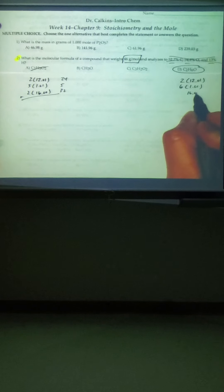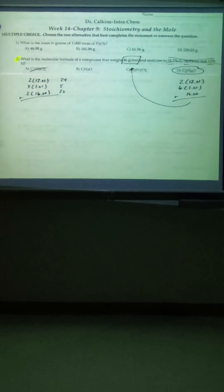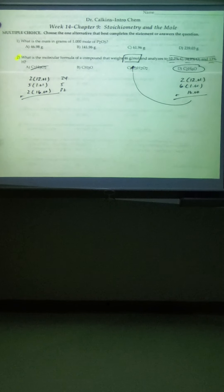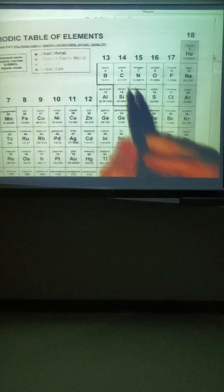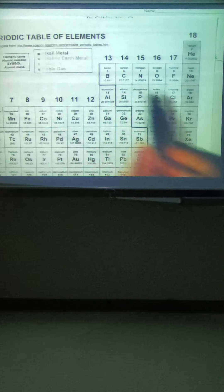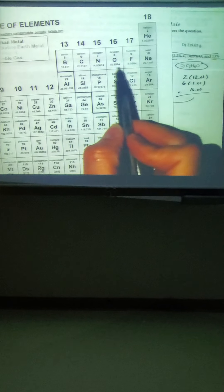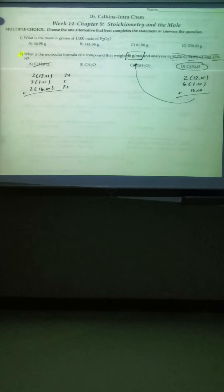Two carbons at 12.01, six hydrogens at 1.01, and oxygen at 16 — those numbers give us 46 grams per mole total. When doing that, the molar mass comes from the periodic table: we're using 12.01, 1.01, rounding up, and then 16. Finding the one that weighs 46 works for number 2.